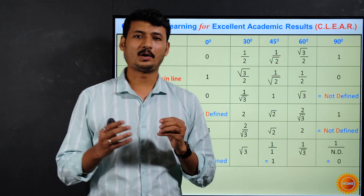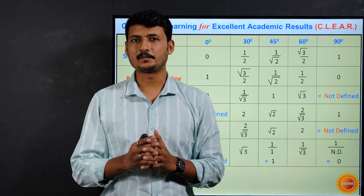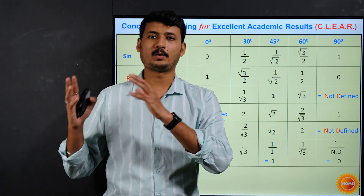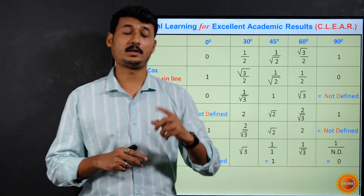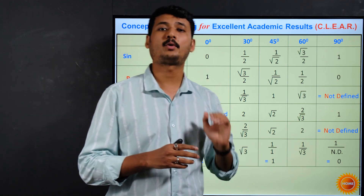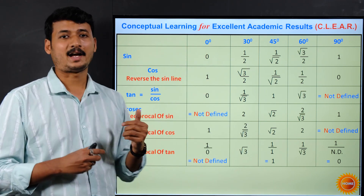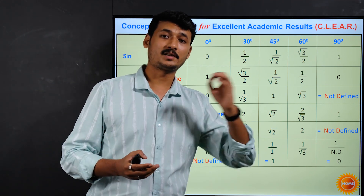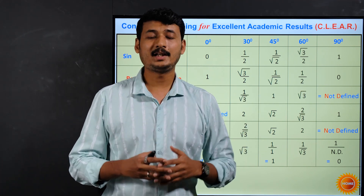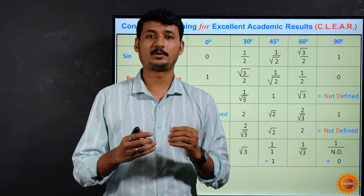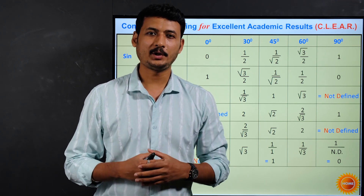Let's quickly recap what we did in this video. We covered the relation of reciprocals of trigonometric ratios, then the formula tan theta equals sine upon cos, and then the trigonometric table for standard angles. A trick was shared to write down the table on your own, but it is better to learn the values by heart.